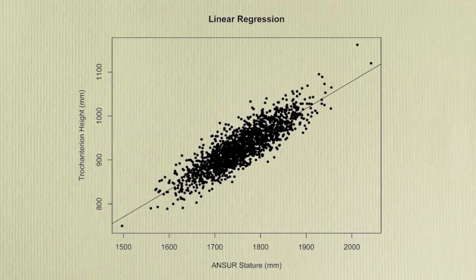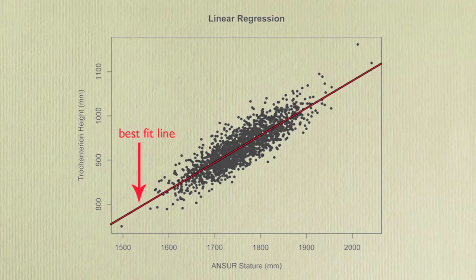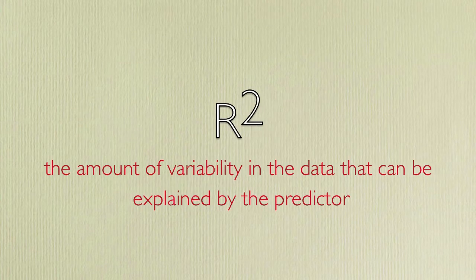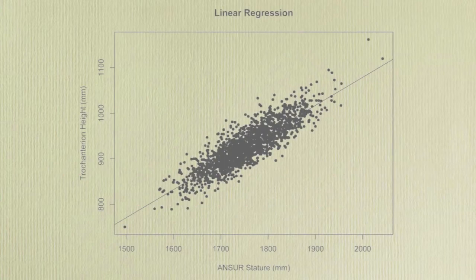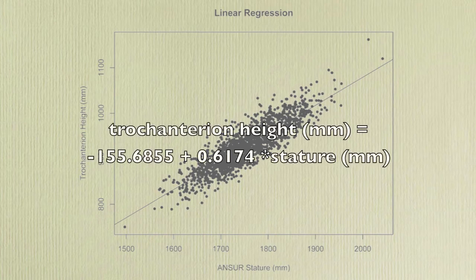Accurate predictions of anthropometry measures can be created through the use of linear models. A linear model finds a best-fit line for the data. Linear models also show us the correlation between data — r-squared — which is the amount of variability in the data that can be explained by the predictor. So, using stature as a predictor for trochanterian height can account for 75% of the variability in the data.